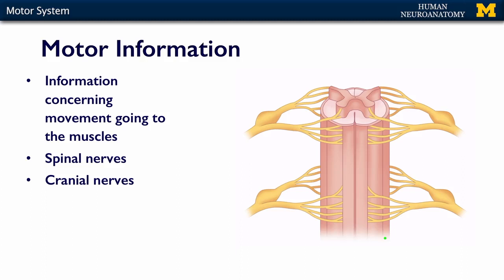Motor information is information coming from the brain, going through the brain stem and spinal cord, out your spinal nerves, and it's information concerning movement going actually to your skeletal muscles.